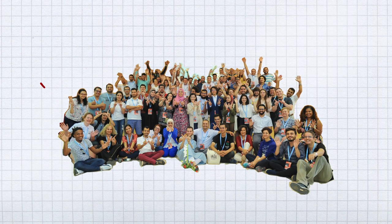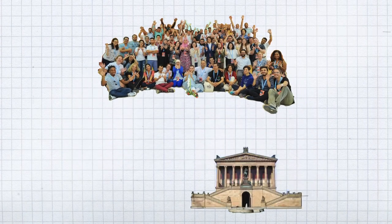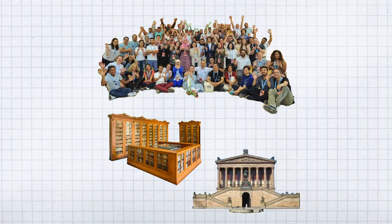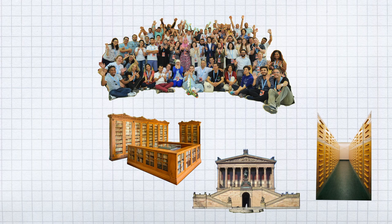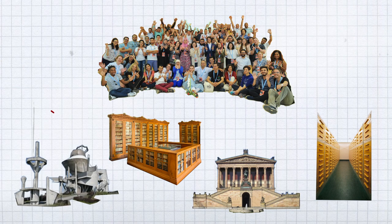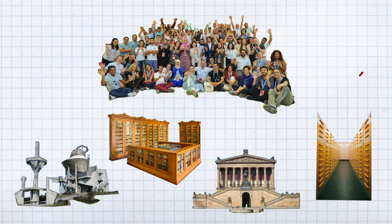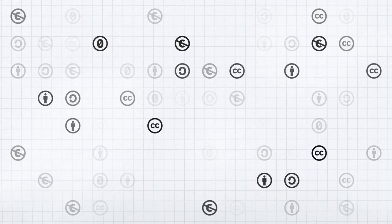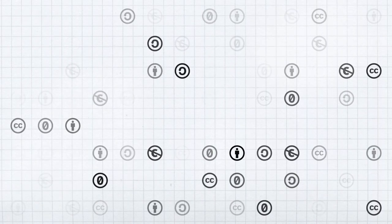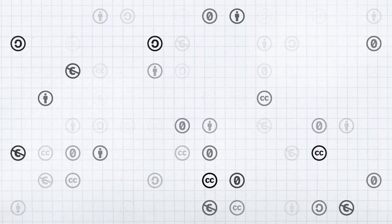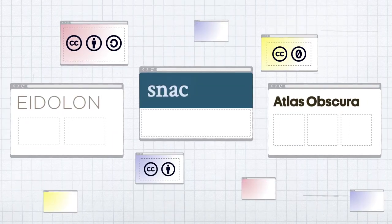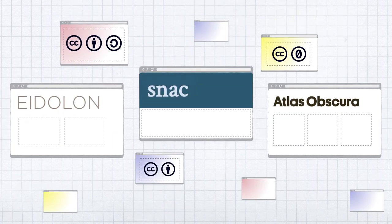Wikimedians around the world also partner with galleries, libraries, archives and museums. Many files are contributed through these partnerships. Just like on Wikipedia, the files on Commons are free to be reused by anyone. You often see them as illustrations on various websites.